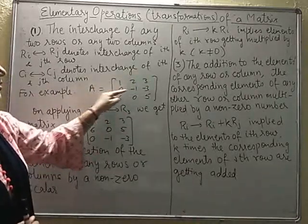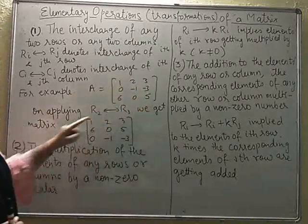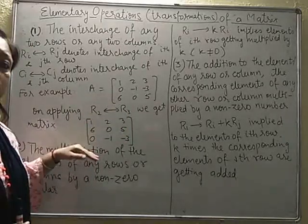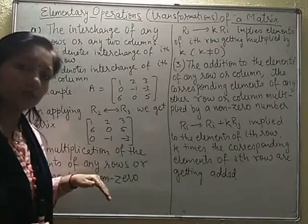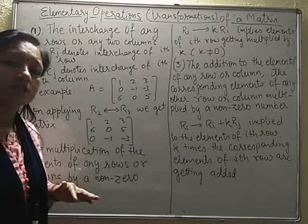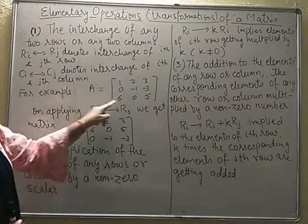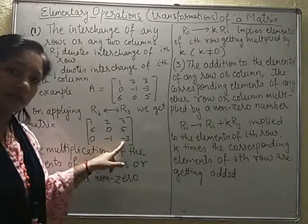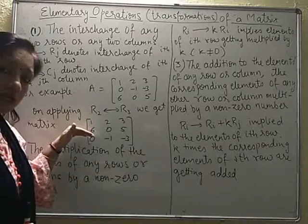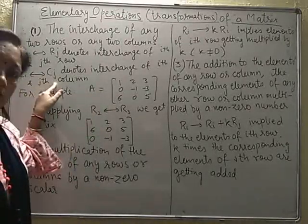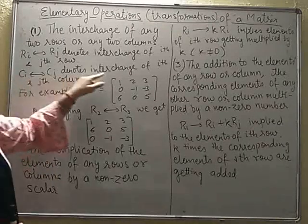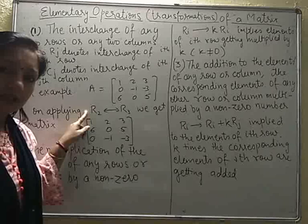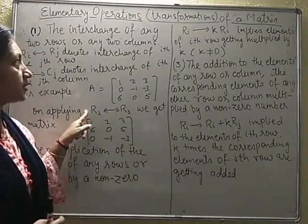For example, if you look at this matrix, this is the first row, this is the second row, and this is the third row. If we apply the operation R2 ↔ R3, that means all the elements of row 3 will occupy the corresponding position in R2 and all the elements of R2 will occupy the corresponding position in R3. After applying this operation, the elements of the third row are now in the second row and vice versa. In the same way, column transformation can also be applied — interchanging the Ith column and the Jth column.